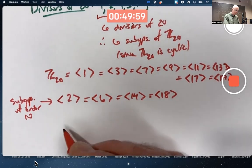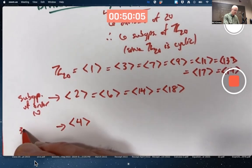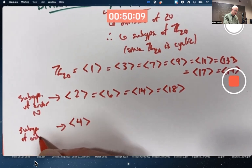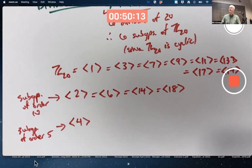How about a subgroup of order 5? It's that. Subgroup of order 5. What are the elements? Multiples of 4: 4, 8, 12, 16, and 0.